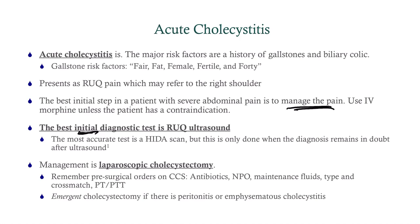Management is laparoscopic cholecystectomy. Remember to complete all pre-surgical orders. We usually give pre-op antibiotics, but we don't need to here because we're already giving empiric antibiotics for the cholecystitis — additional antibiotics won't help. We would do an emergent cholecystectomy — meaning the surgeon runs down to the ER immediately — if there is peritonitis, sepsis, guarding, rebound pain, or emphysematous cholecystitis, which you'd typically appreciate on ultrasound.